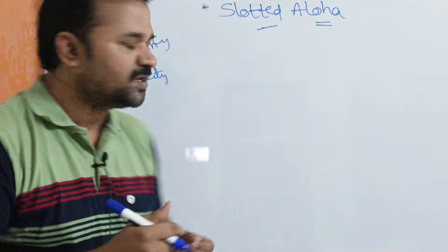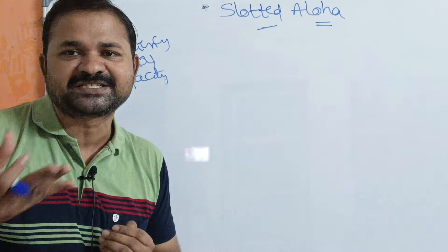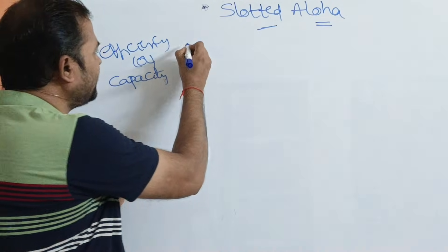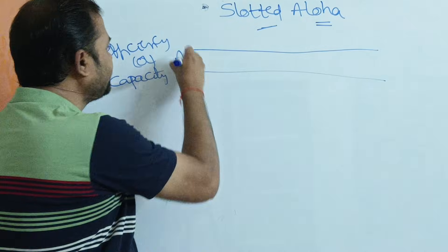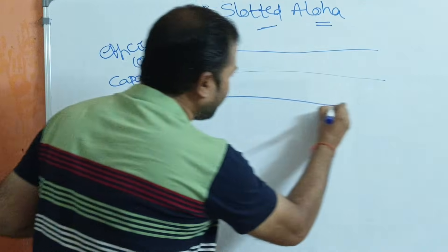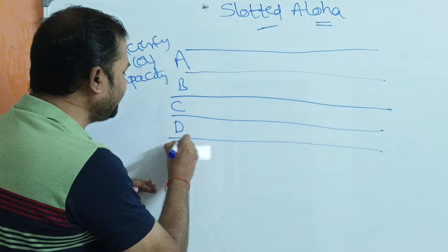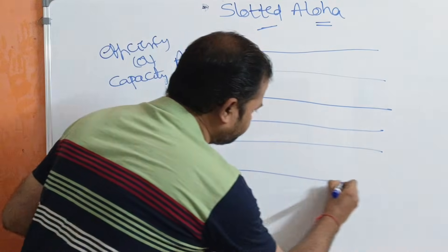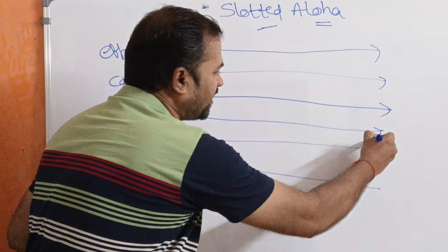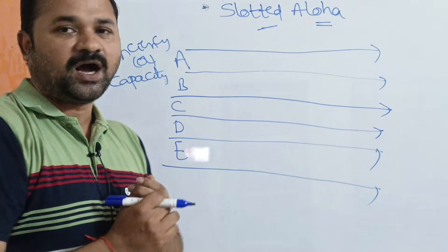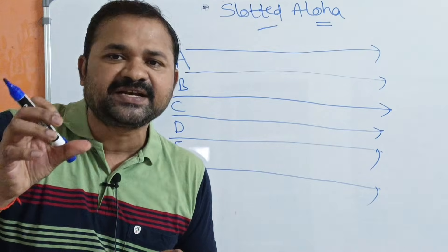The name itself specifies the meaning — in slotted ALOHA, time is divided into slots. Here also we use a shared medium, so multiple users share the common communication channel. For example, consider users A, B, C, D, and E — five users all sharing the same communication channel, with the horizontal axis representing time.